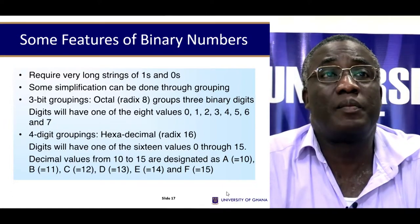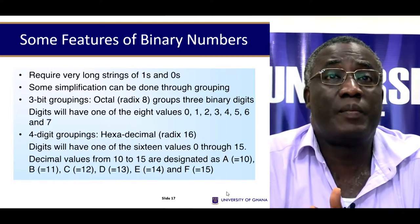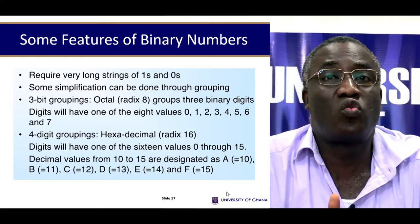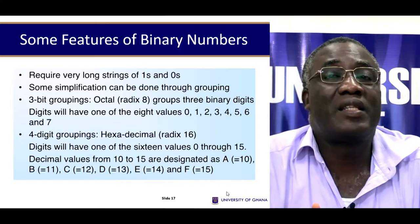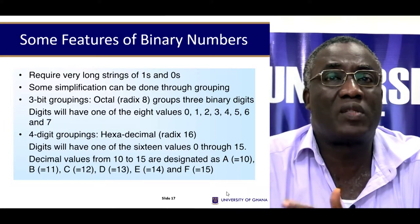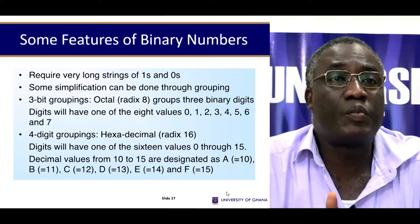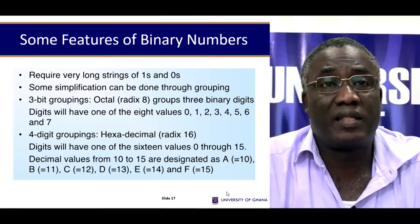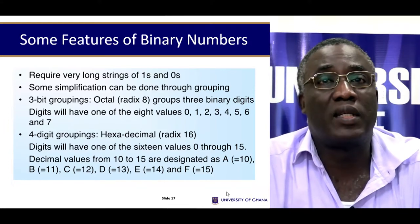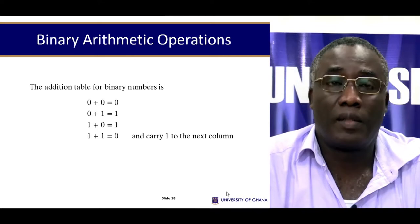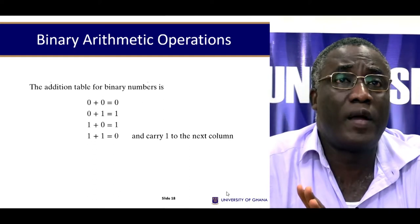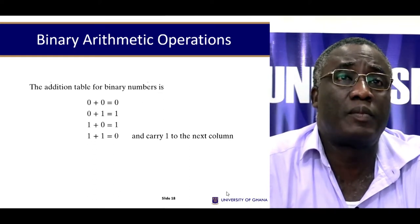In the octal system, you have values from 0 through to 7. In the hexadecimal system, you have values from 0 through to 15. From 10 onward, alphabets are used: 10 is A, 11 is B, 12 is C, 13 is D, 14 is E, and 15 is F, and then you come back to 0. These are things you should be conversant with and understand well.